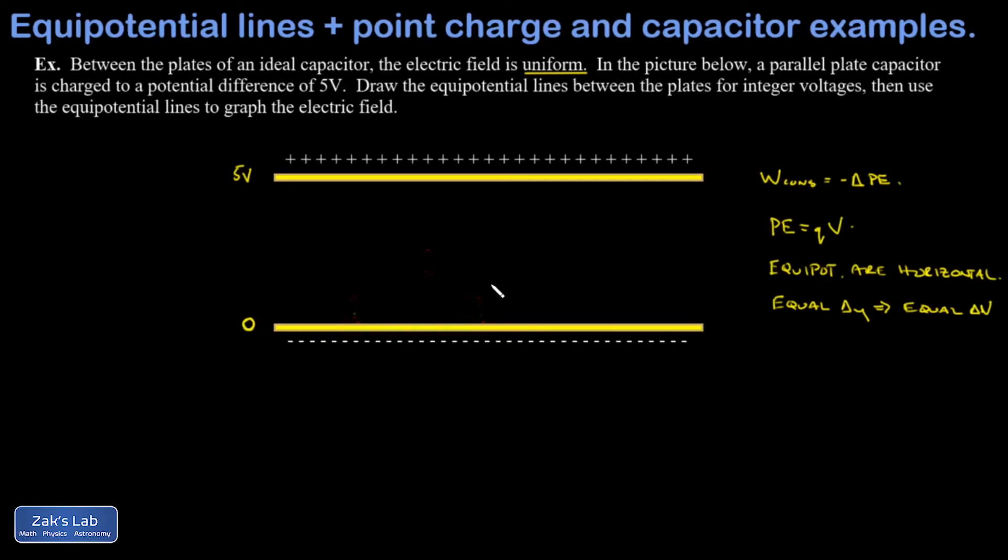So what does it all mean? It means that if I want to mark the integer voltages on the way up from 0 volts to 5 volts, I just have to divide this space into five equal segments. And I end up with an equipotential line at 1 volt, an equipotential line at 2 volts, an equipotential line at 3 volts, and an equipotential line at 4 volts. So that uniform electric field between the plates of an ideal capacitor leads to a uniform set of equipotential lines, where an equal change in height leads to an equal change in potential.